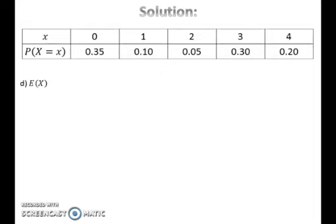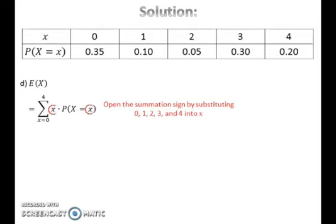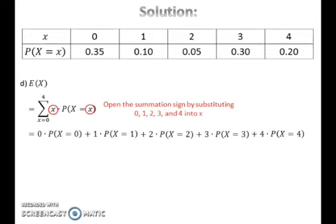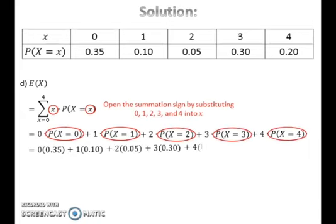To find the expected value of x, take the summation of x times probability for all x, that is for x from 0 to 4. Open the summation sign by substituting 0, 1, 2, 3, and 4 into x, then substitute the values of the probabilities and calculate the expected value of x.